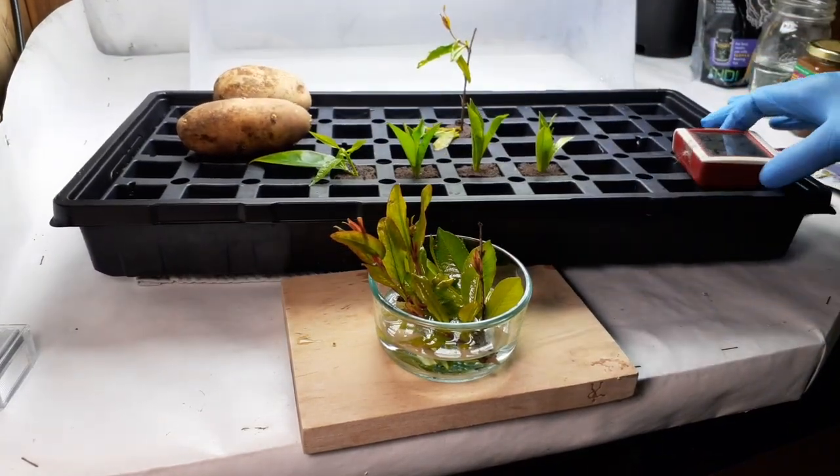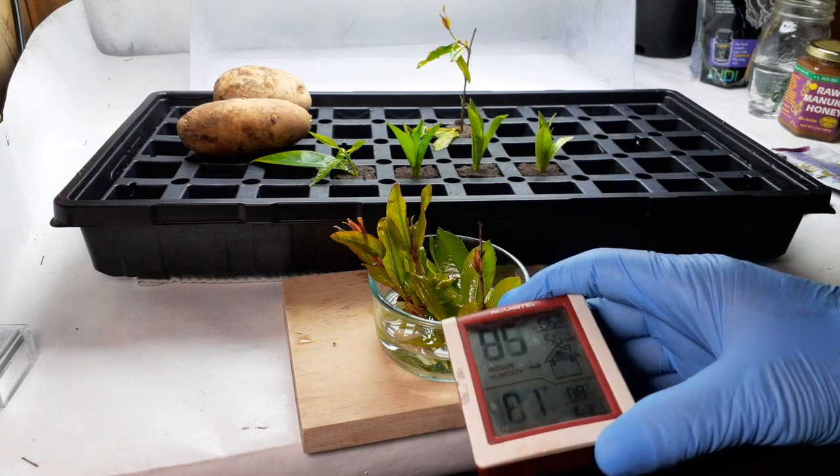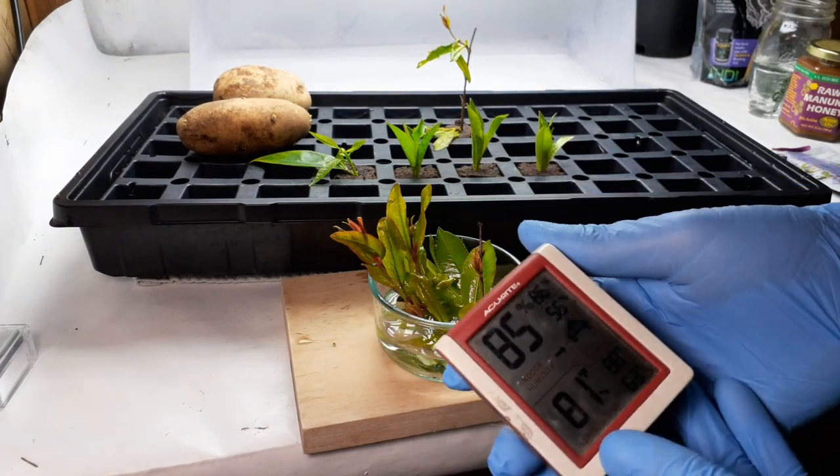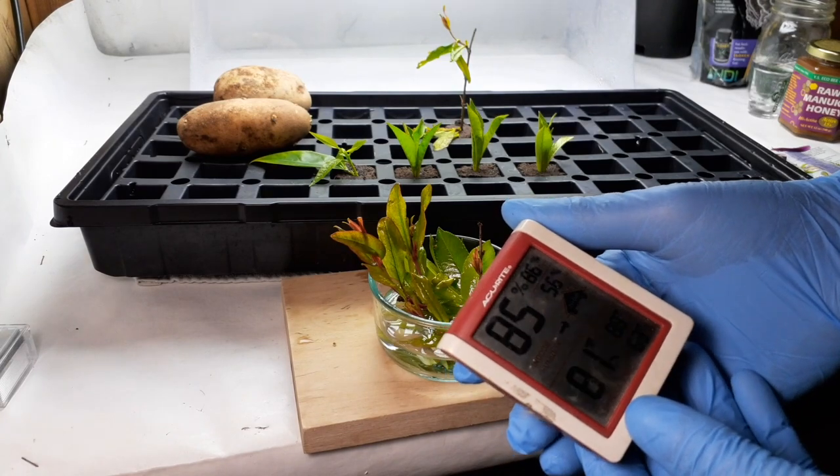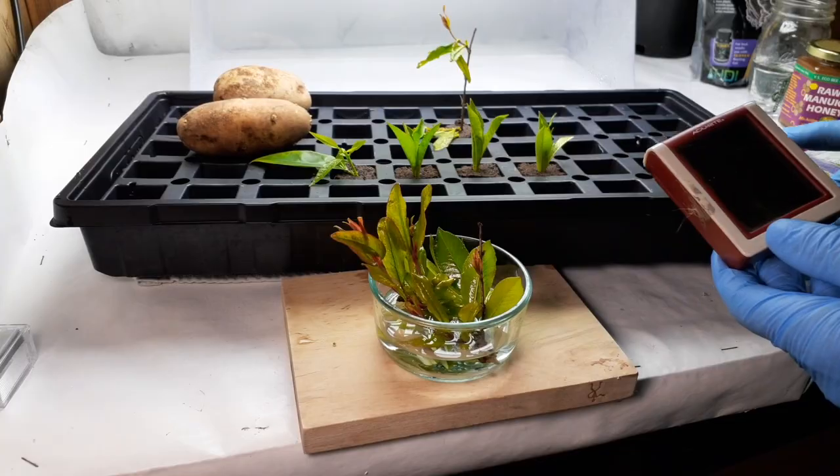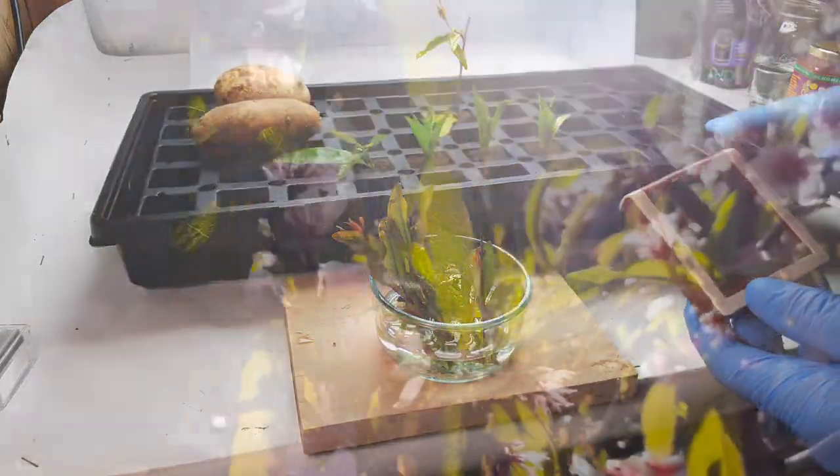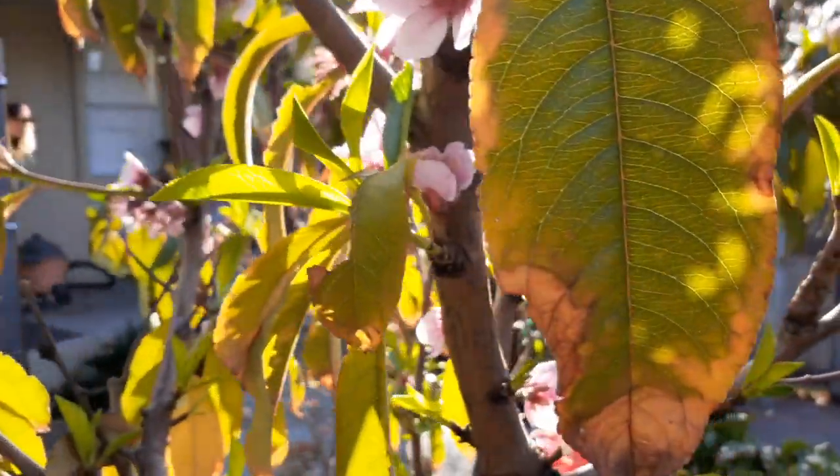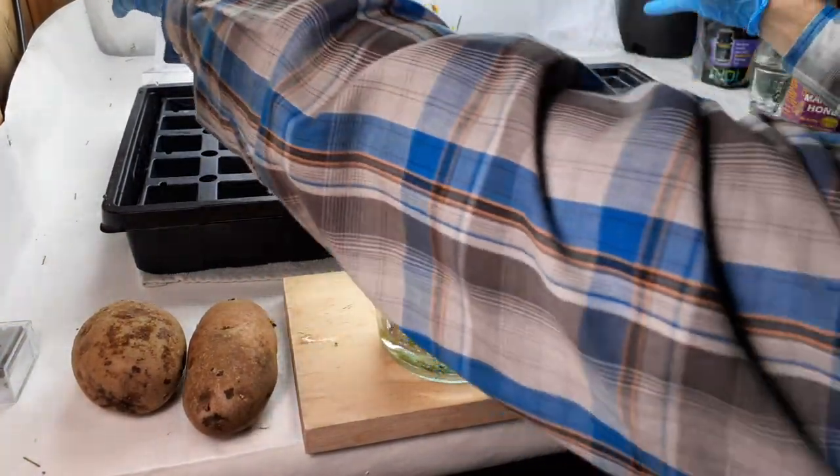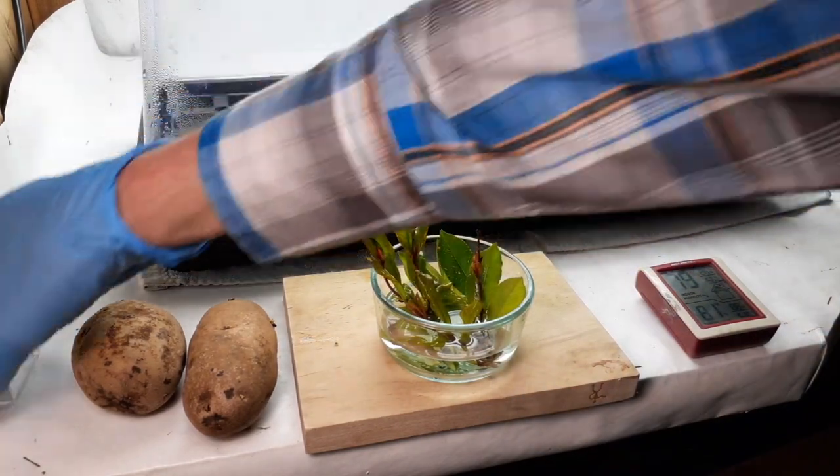You can see we're at 81 degrees temperature inside of the dome and 85% humidity. That's pretty good, but I want to keep the humidity very high in here. You want it to be like a rainforest. These three are the peaches, this is the blood orange.